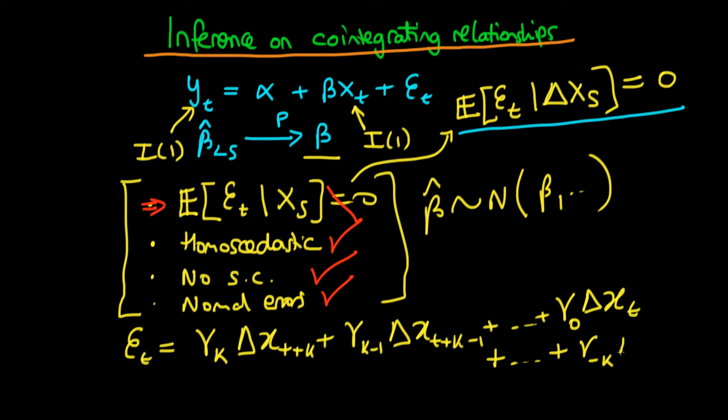And once we have essentially taken into account all of this variation in et which is due to these other values of x, or these other values of the change in x, we're left with an error term vt, which by construction, by mere fact that I've said that et depends on all these other factors,